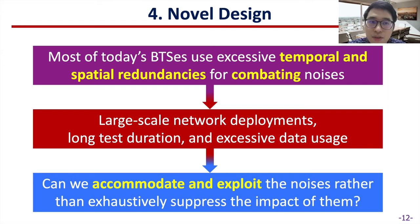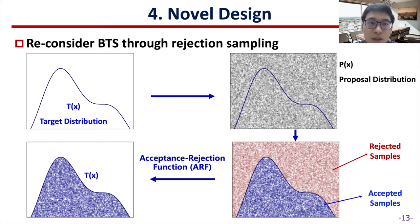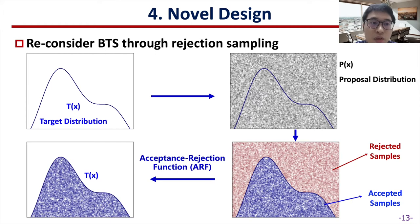Therefore, we intend to think about it in another way. Can we accommodate and exploit the noises rather than suppress the impact of them? To answer this question, we first try to reconsider BTS's statistical framework of rejection sampling. The pipeline of rejection sampling is quite simple: given a target distribution T(x), we want to select desired samples that obey T(x) from the input samples subjected to the proposal distribution P(x). We use an acceptance-rejection function, or ARF for short, to accept the desired samples and reject the others.